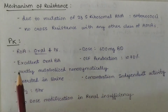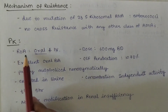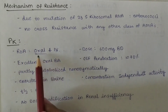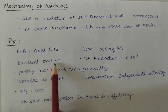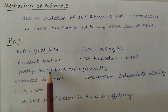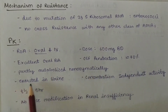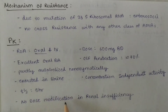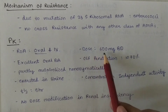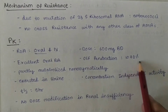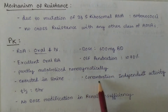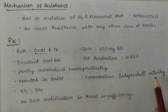Pharmacokinetics: the route of administration is oral and IV; it is more preferred orally. It has excellent oral bioavailability. It is partly metabolized non-enzymatically and excreted in the urine. The half-life is 5 hours. No dose modification is needed in renal insufficiency. The dose is 600 mg twice a day.